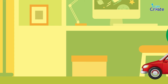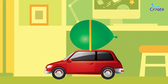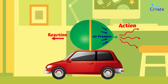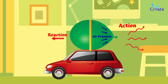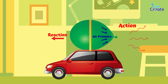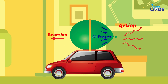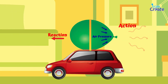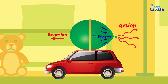Now let's take a look at the example of the balloon-powered car. The action is the air rushing out of the balloon, pushing against the air behind the car. The equal and opposite reaction is the air behind the car pushing against the car with the same force, causing the car to propel forwards.